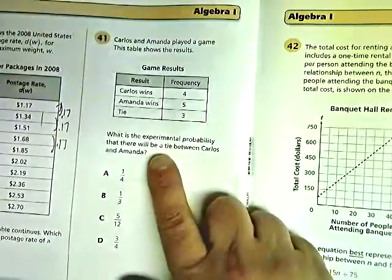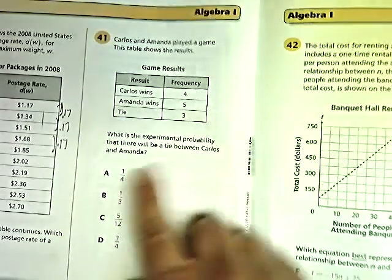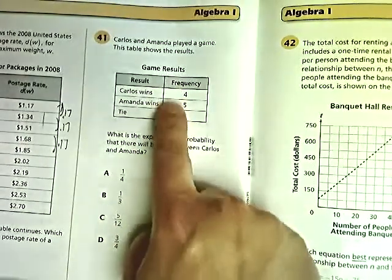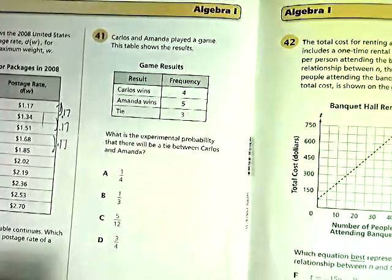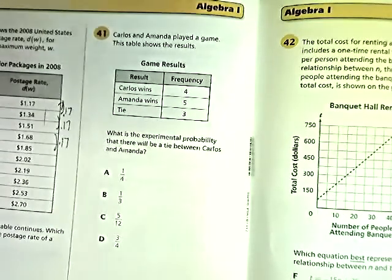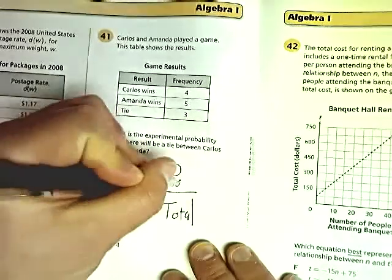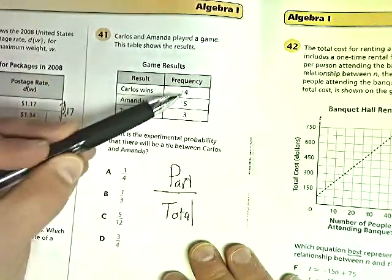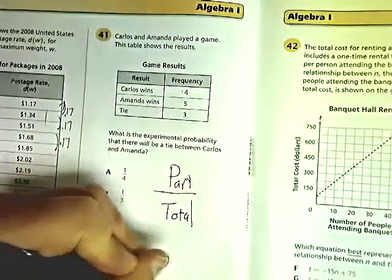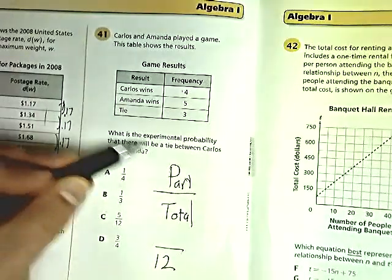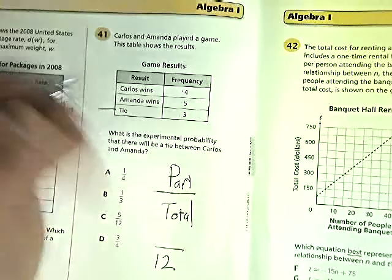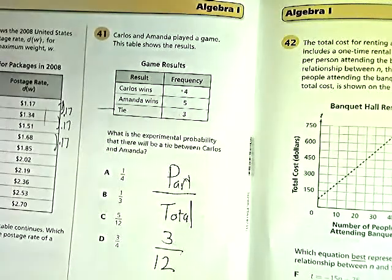What is the experimental probability that there will be a tie between Carlos and Amanda? They actually played the game. That's where the experimental thing came in. Now the first thing we need to do, of course, is find the total. And then we're going to put the part over top. The total, 4 plus 5 plus 3, would be 12. The tie would be 3 because there's only 3 of them. That's the part.